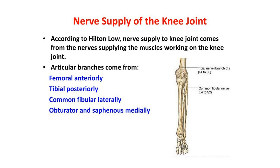The nerve supply of the knee joint follows Hilton's law, which states that the nerve supplying the muscles working on a joint also supplies nerve branches to that joint. For the knee joint: the femoral nerve supplies it anteriorly; the tibial and common peroneal nerves supply it posteriorly and laterally; and the obturator and saphenous nerves supply it medially.